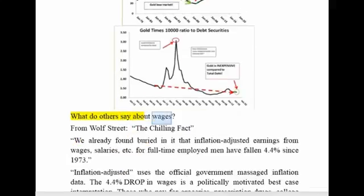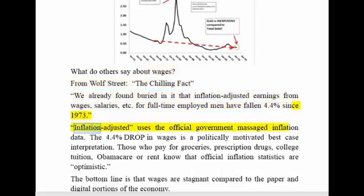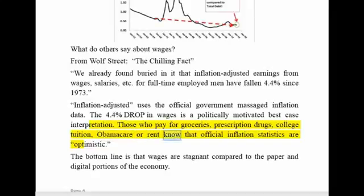What do others say about wages? From Wolf Street: the chilling fact buried in the data is that inflation-adjusted earnings from wages, salaries, etc. for full-time employed men have fallen 4.4% since 1973. Inflation-adjusted uses the official government-massaged inflation data, so the 4.4% drop is a politically motivated best-case interpretation. Those who pay for groceries, prescription drugs, college tuition, Obamacare, or rent know that official inflation statistics are optimistic.